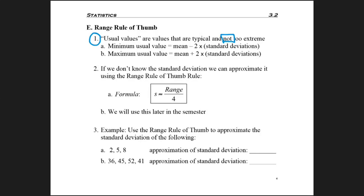to find that usual minimum or that usual maximum, what we do is we take the average, which we've already studied, and then we either add or subtract two standard deviations.